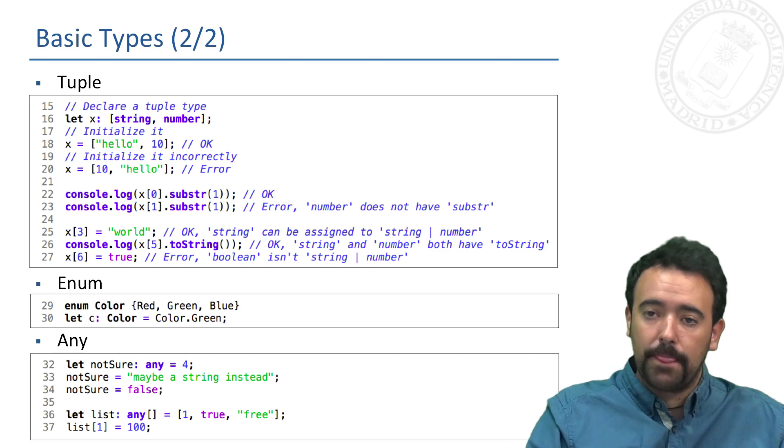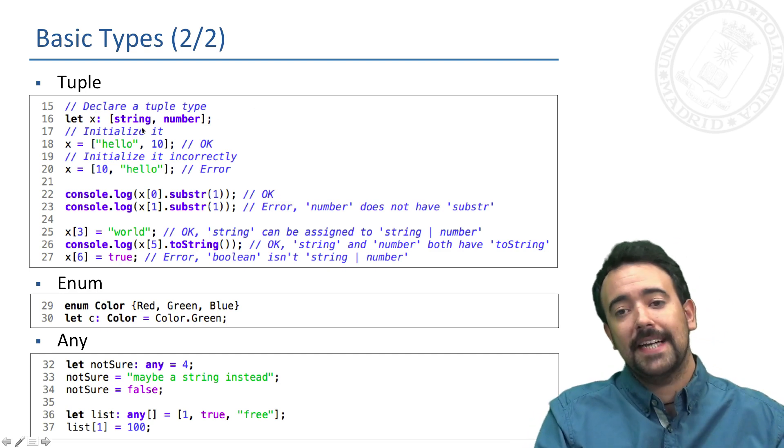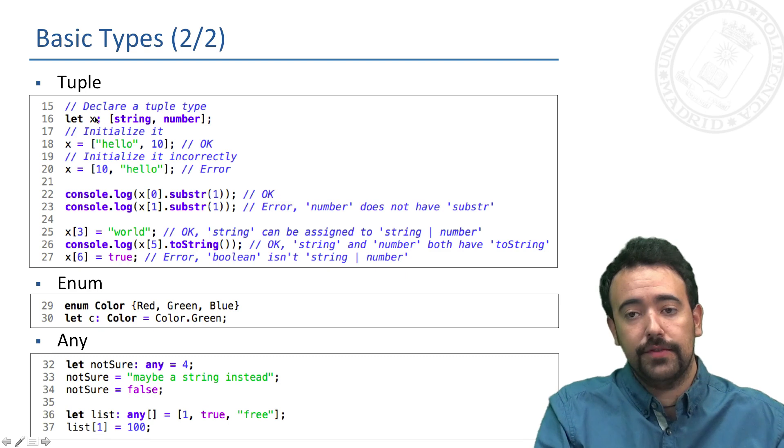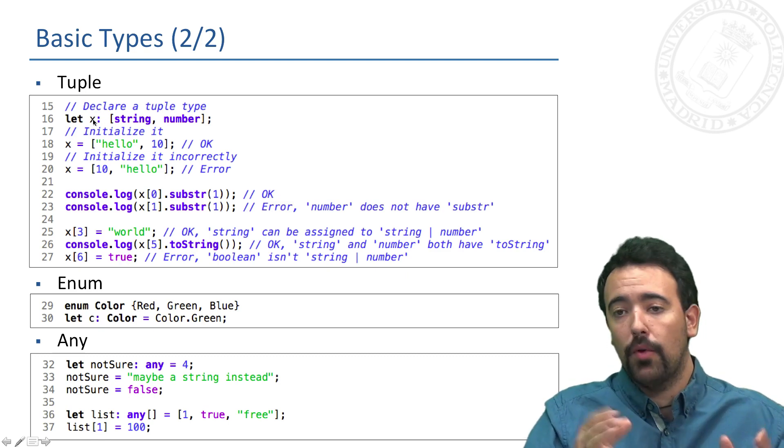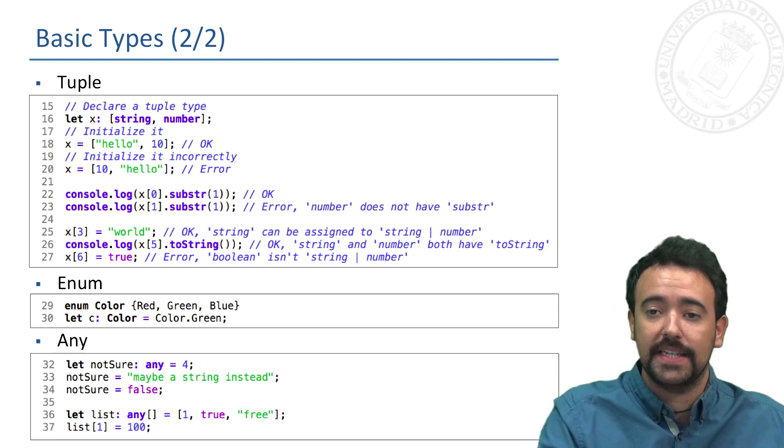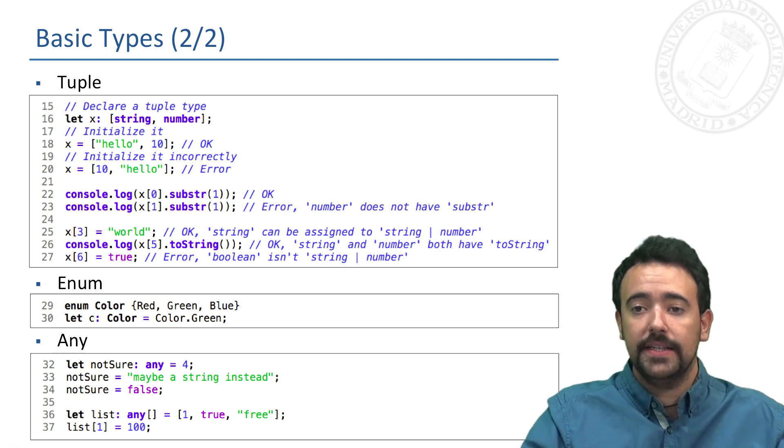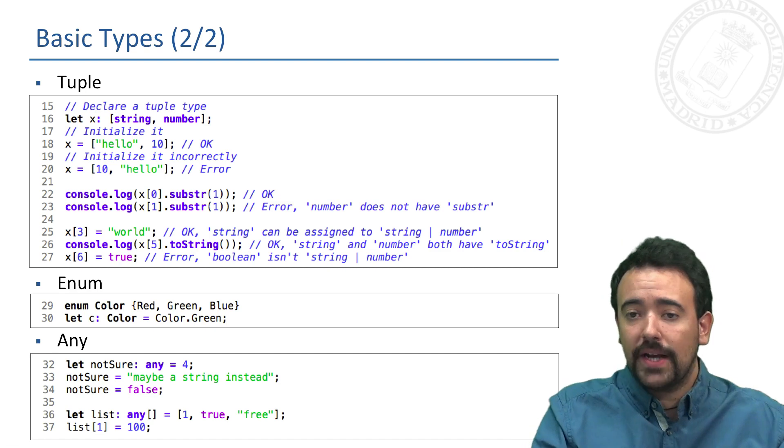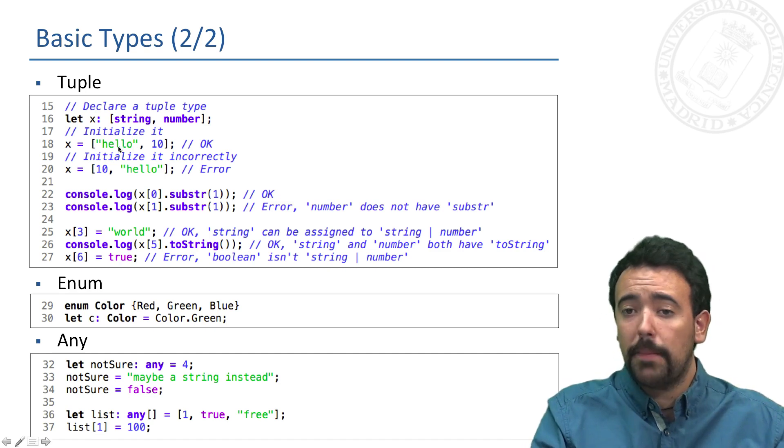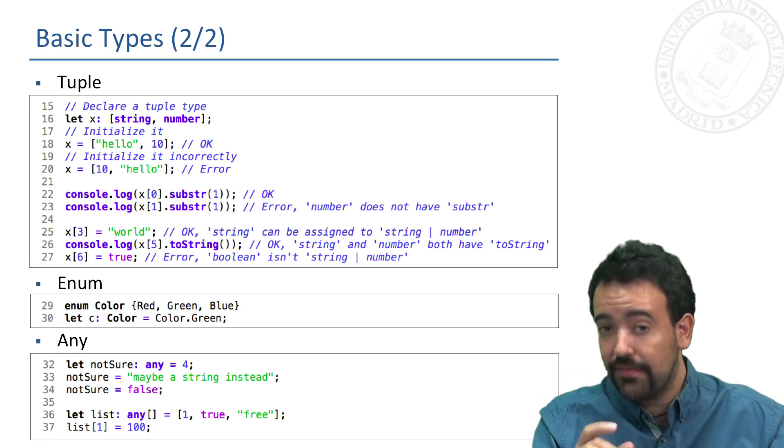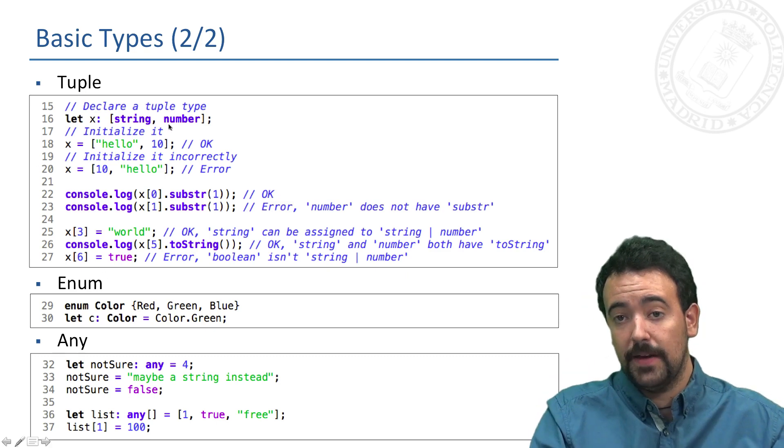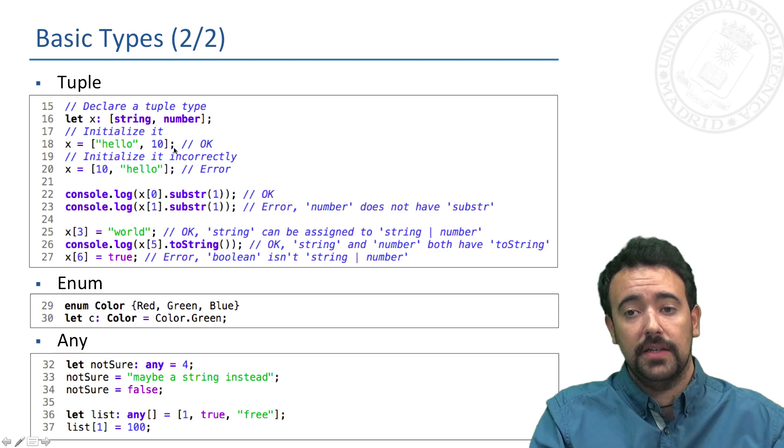A tuple in which we can define a set of values of different types. For instance, in this case the var x is composed by two values: the first one is a string and the second one is a number. Now in this example we can see how the TypeScript compiler will check the validity of the values we have included in this tuple. For instance, in this case the creation is valid because the first one is a string and the second one is a number.